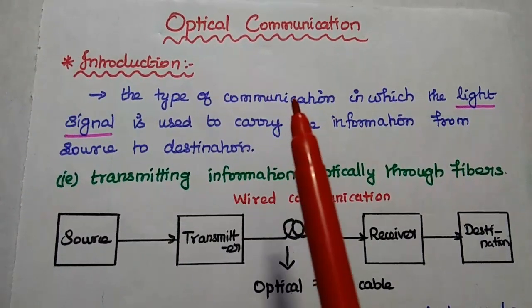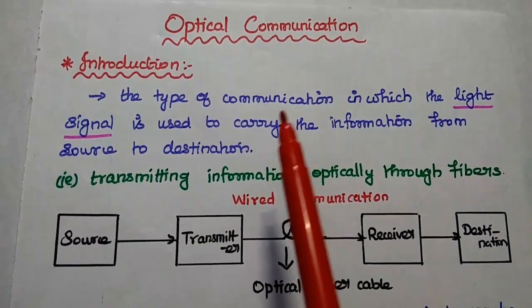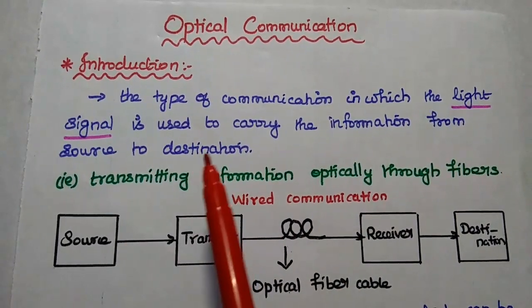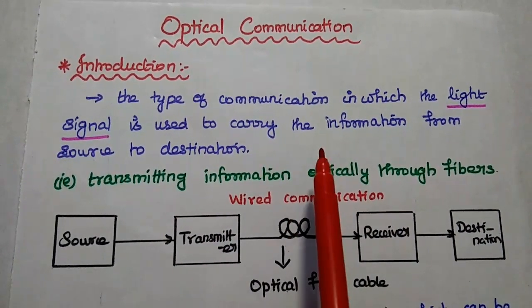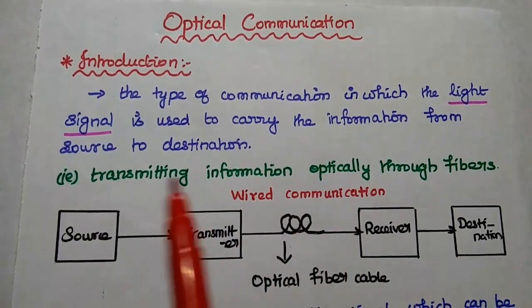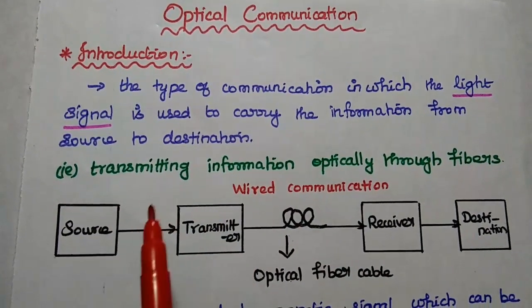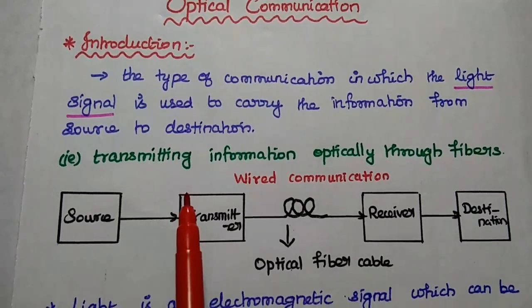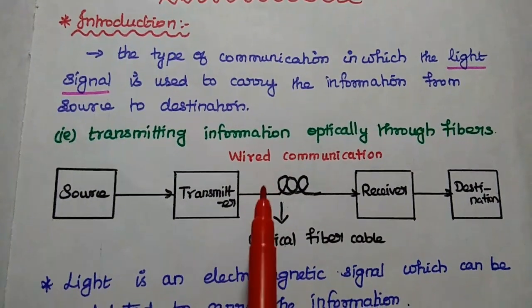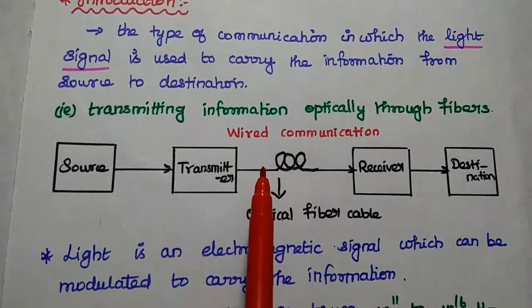Dear students, now we are going to discuss the basics of optical communication system. It is the type of communication in which the light signal is used to carry the information from source to destination. That is transmitting the information signal optically through the fiber cable. It is the wired communication system.